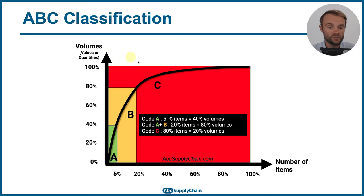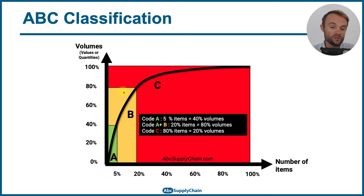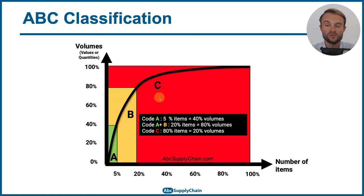If we look at the ABC classification for products, you'll see this kind of distribution. On one part you have the number of items, on the other the volume — you can use values or quantities. The curve goes vertical at the beginning: A codes — typically 5% of your items represent 40% of your volumes. A plus B together represent 20% of items and 80% of volumes. Then for C codes the curve gets flat, with many items having no significant impact on revenue.